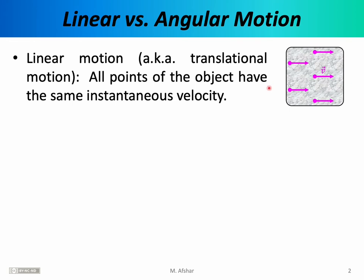You can also pick up this box and throw it across the room, in which case you would have projectile motion, but projectile motion is also an example of linear motion. Certainly if this box were flying across the room, this atom here might be moving with this type of a velocity vector, but as that atom moves in that direction, so does every other atom. The point is projectile motion is an example of linear motion because all points of the object have the same instantaneous velocity.